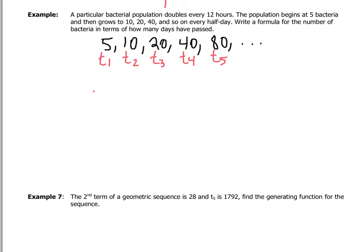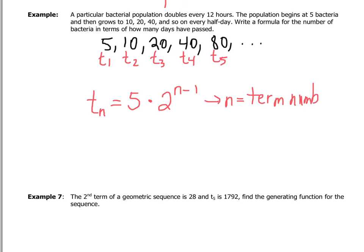Using the formula in terms of term number: tₙ = 5 × 2^(n−1), where n is the term number. But we want to express this in terms of days rather than term numbers. Term 1 is after 0 days, term 2 after half a day, term 3 after 1 day, term 4 after 1.5 days, and term 5 after 2 days.